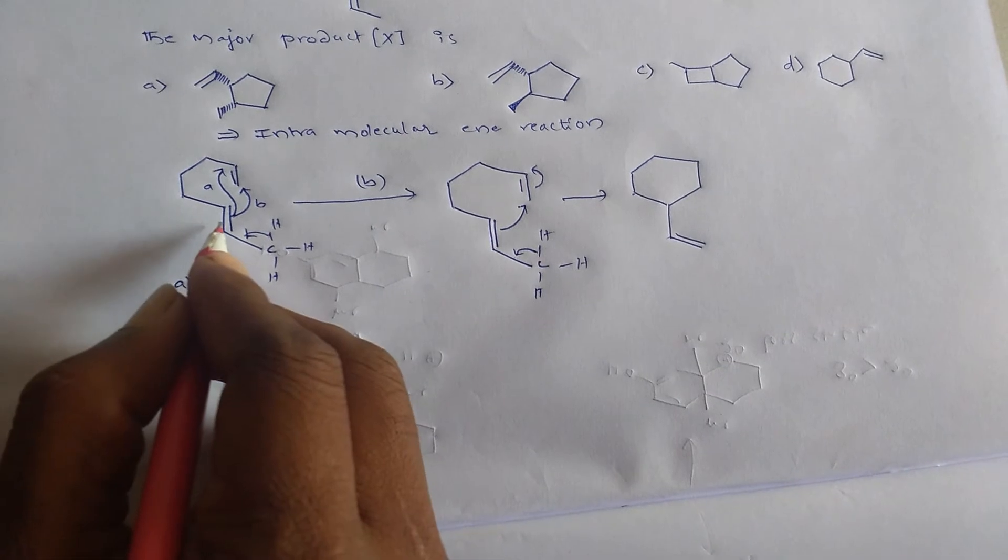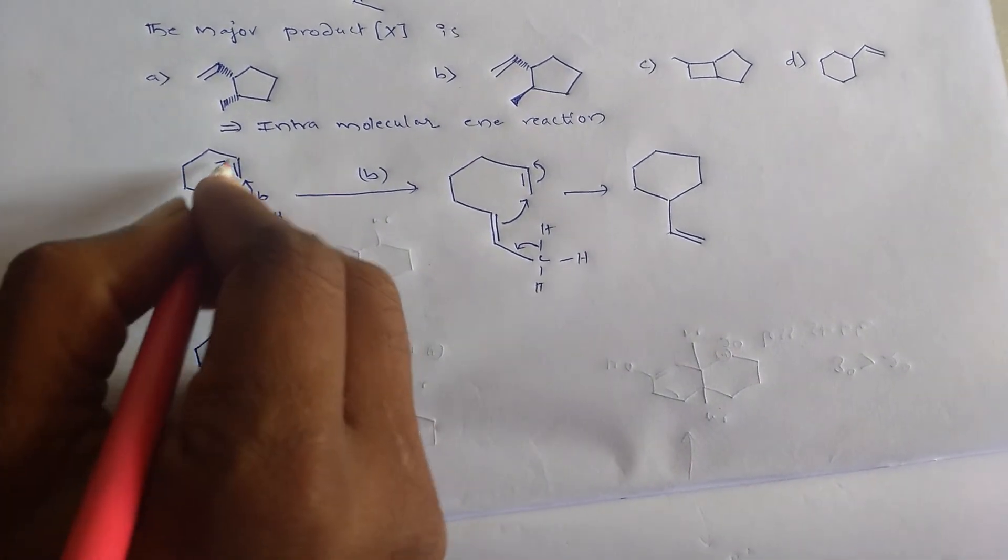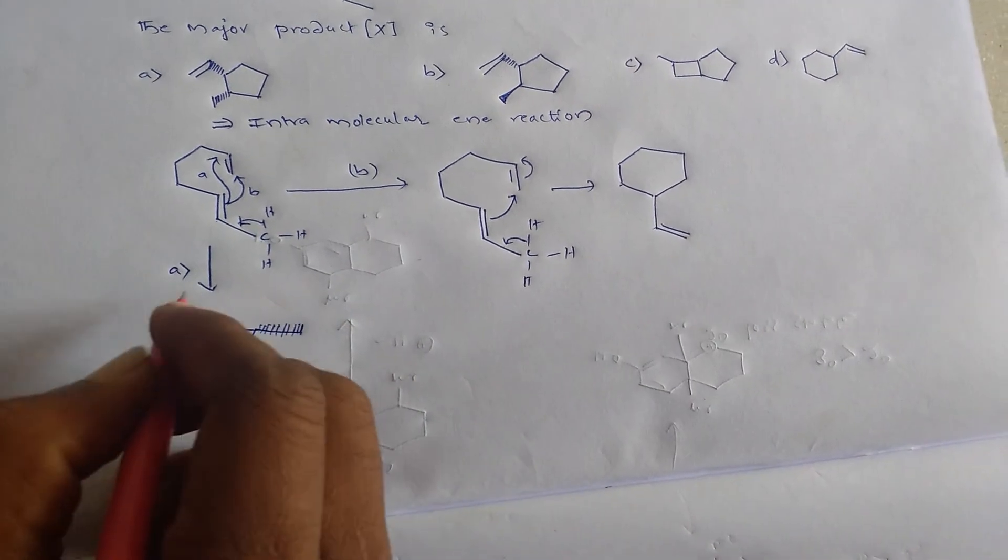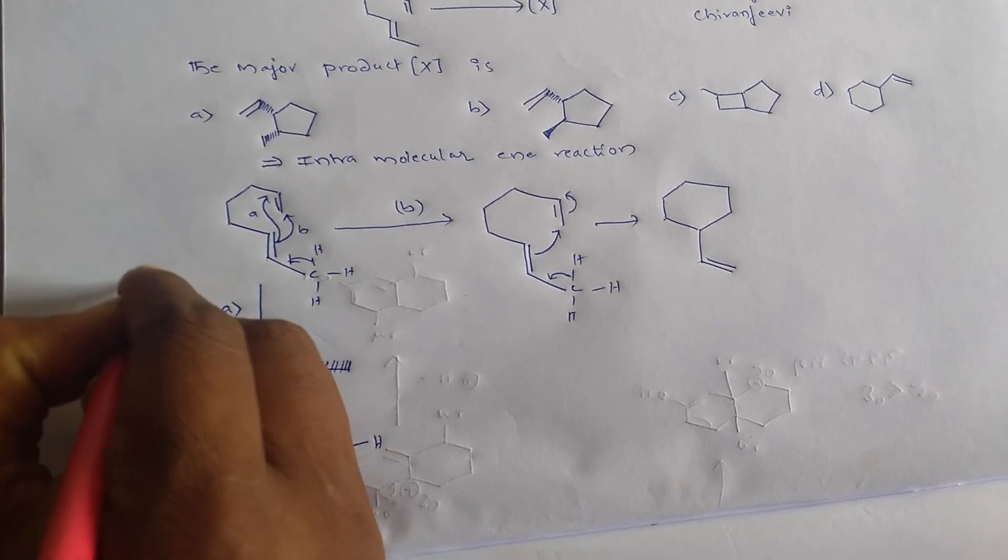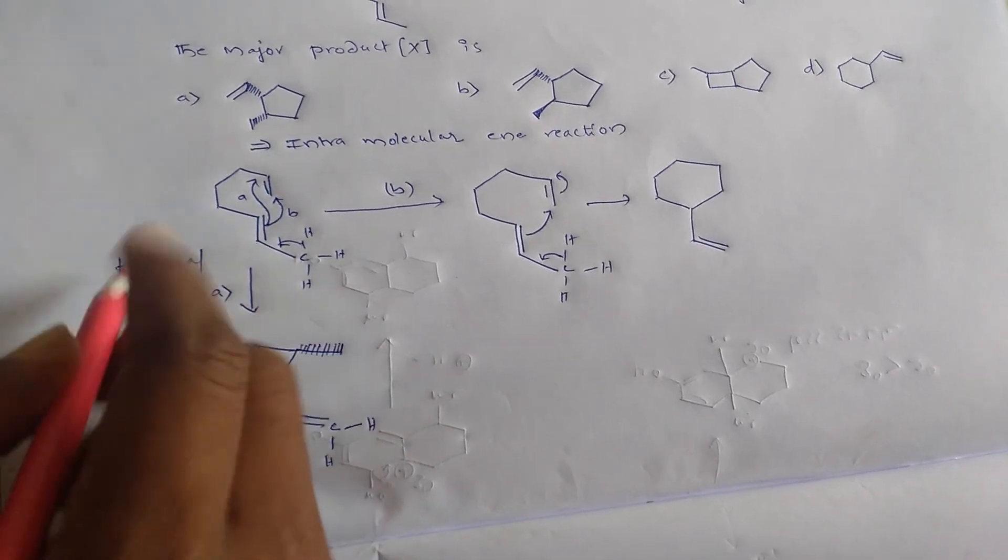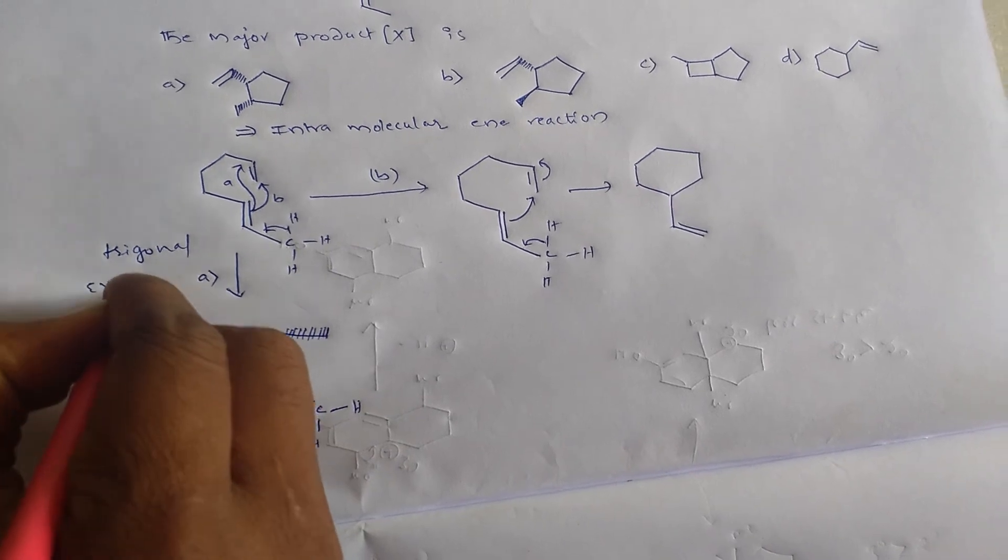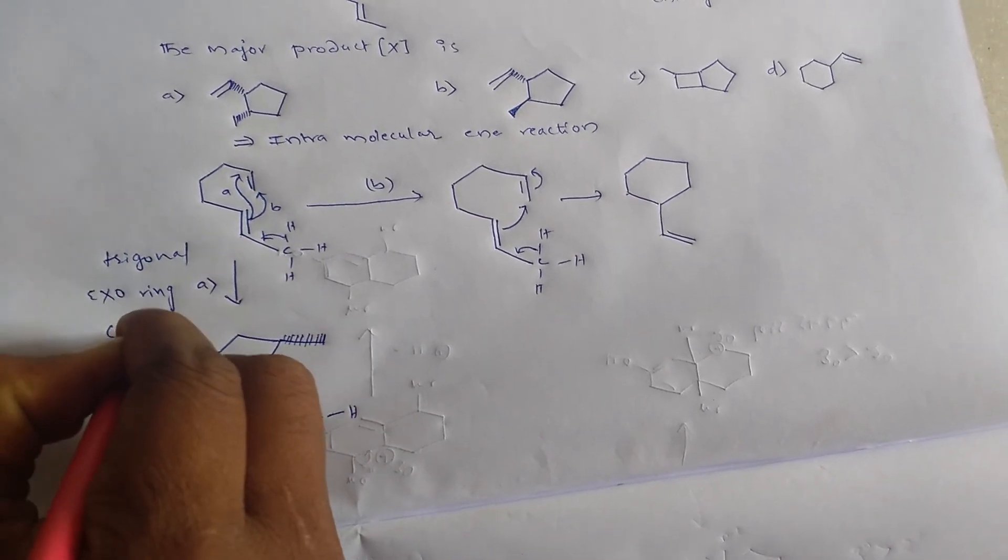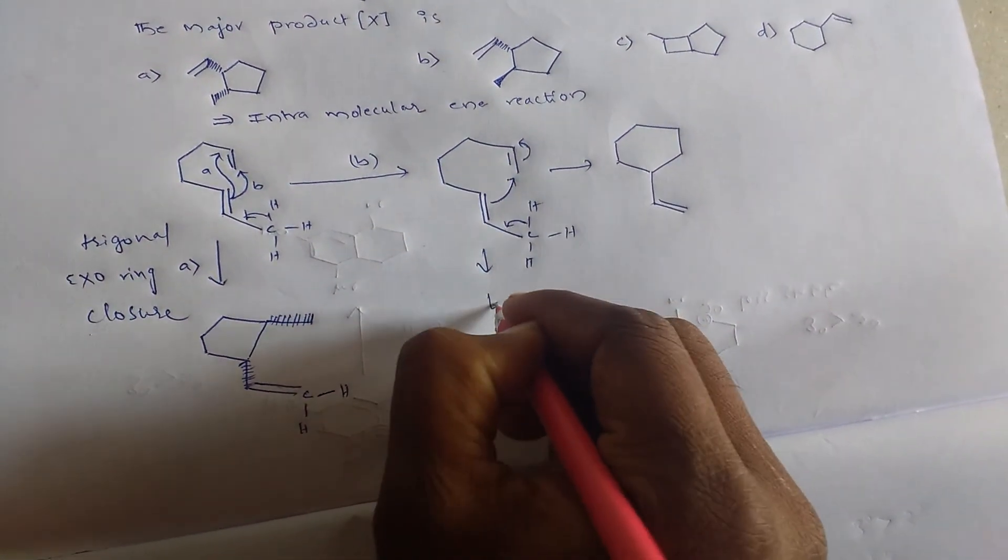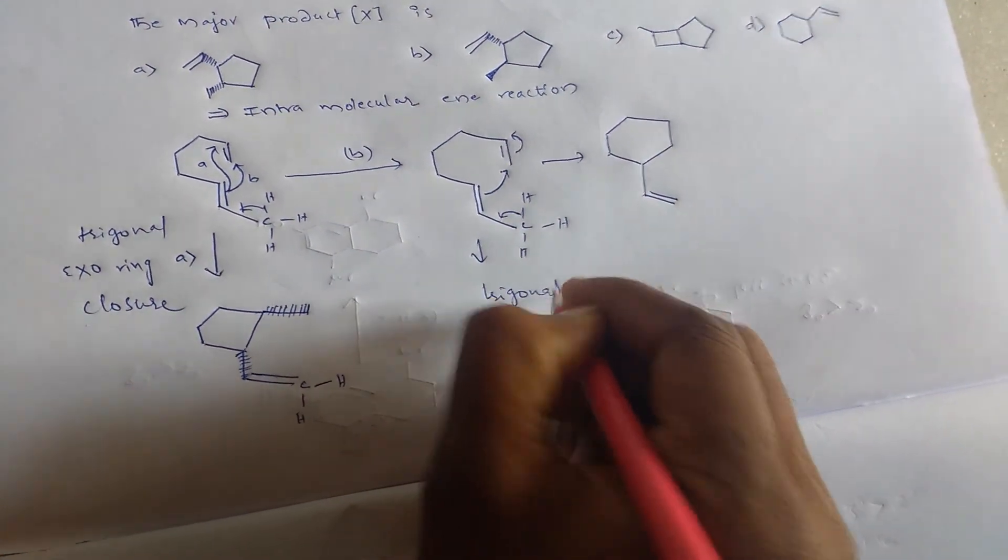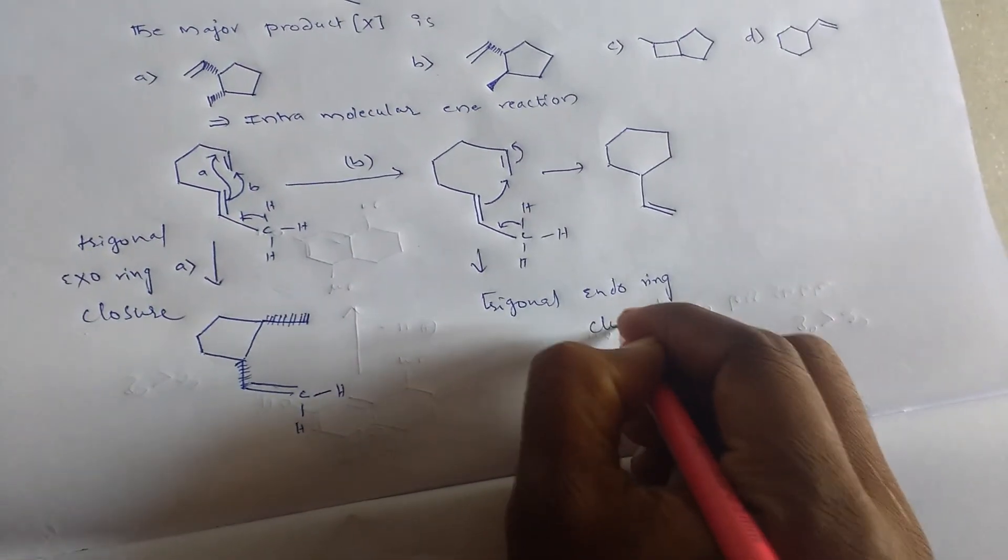This is simply called as trigonal exo ring closure pathway. And this is trigonal endo ring closure.